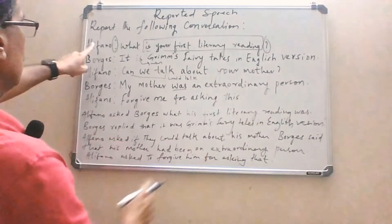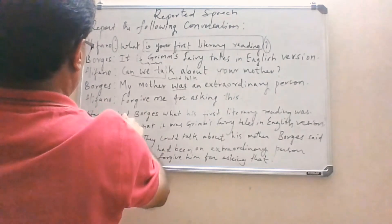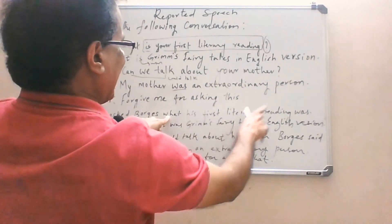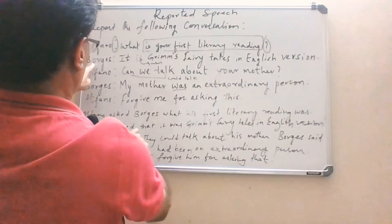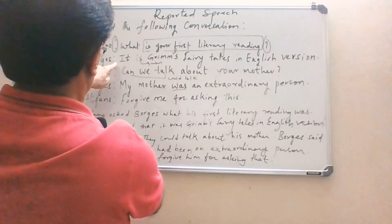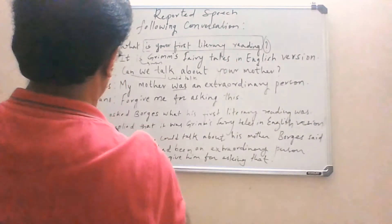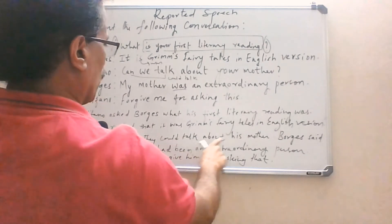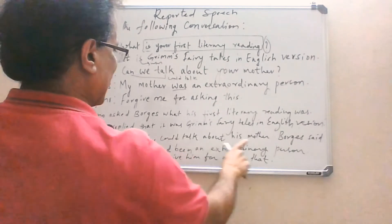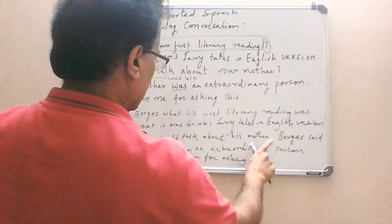Let me repeat once again the full answer. Alifana — it is a WH question, so the reporting verb is 'asked'. Alifana asked Bogus what his first literary reading was. Bogus replied — or you can use 'said' — that it was Grimm's Fairy Tales in English version. Alifana asked if they could talk about his mother. Bogus said that his mother had been an extraordinary person. So Alifana asked to forgive him for asking that.